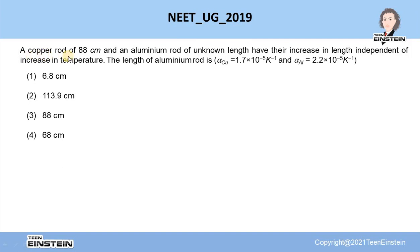In this problem, it is stated that a copper rod of 88 cm and an aluminum rod of unknown length have their increase in length independent of increase in temperature. The length of the aluminum rod has to be calculated where the linear expansion coefficient of aluminum and copper are given here.